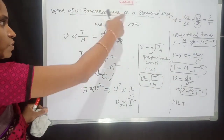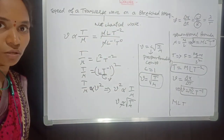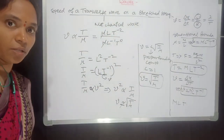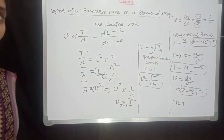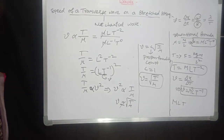Substituting C = 1, the speed of the transverse wave is equal to √(T/μ). This is the equation for the speed of a transverse wave on a stretched string. Please copy this in your notebook.